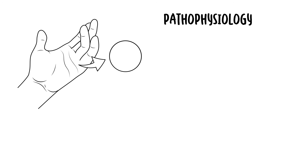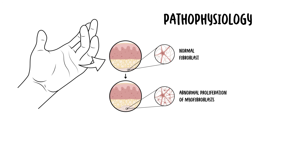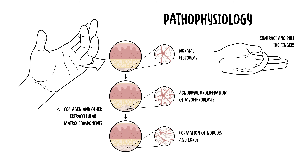Dupuytren's contracture results from abnormal proliferation of myofibroblasts. If we look at a normal palm, you can see it is made up of epithelial cells, fat, and connective tissue. In Dupuytren's contracture, you get abnormal proliferation of myofibroblasts in the palmar fascia — the fibrous layer beneath the skin of the palm. These cells then produce a lot of collagen and other extracellular matrix components, leading to the formation of nodules and cords that can gradually contract and pull the finger towards the palm.